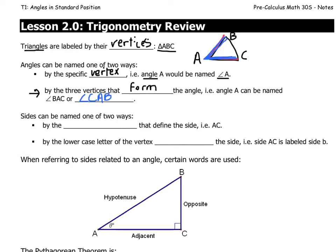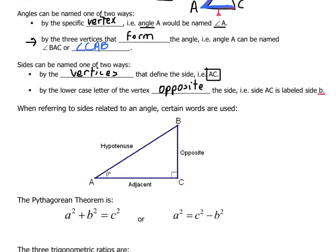This second version of naming angles is a little more formal, but can come in very handy. Next, sides can be named one of two ways. We can name a side based on the vertices that create it — for example, side AC is the side that connects A and C. We can also name sides by the lowercase letter of the vertex opposite the side. In other words, side AC could be labeled side little b. So that's the naming conventions we have.